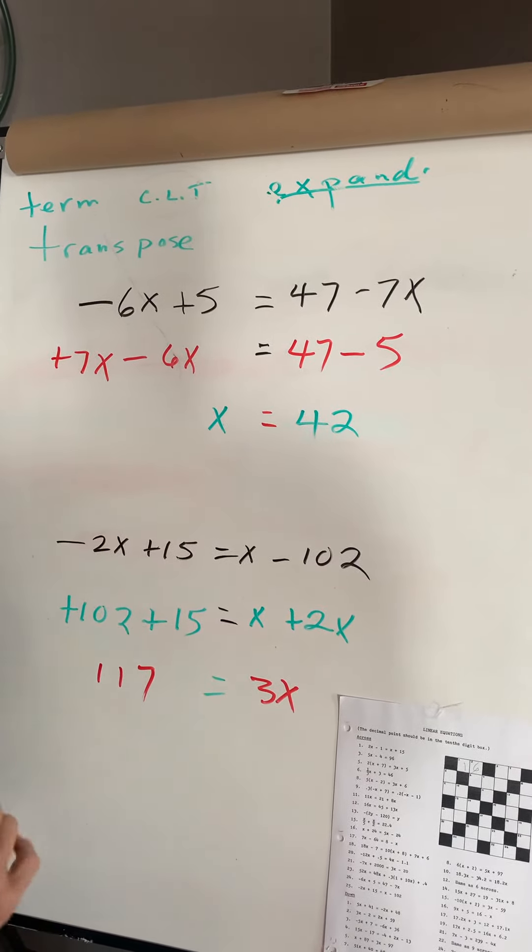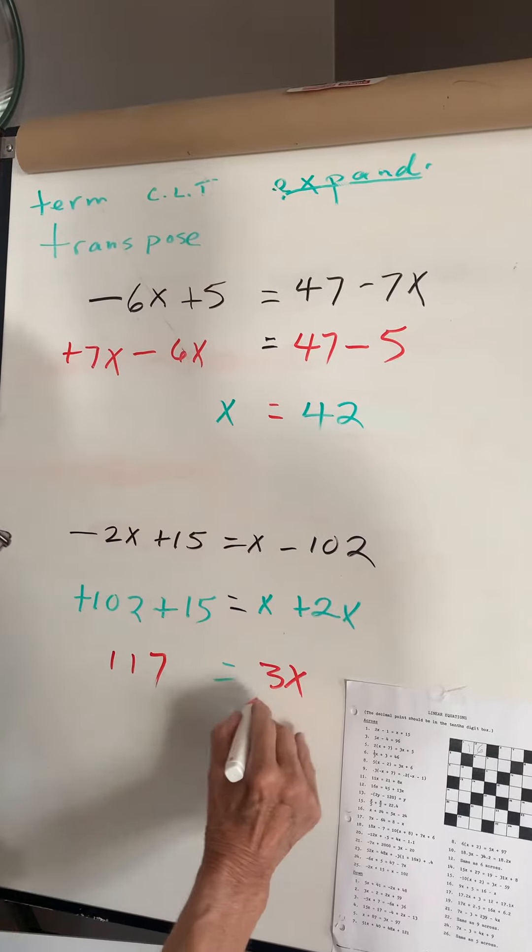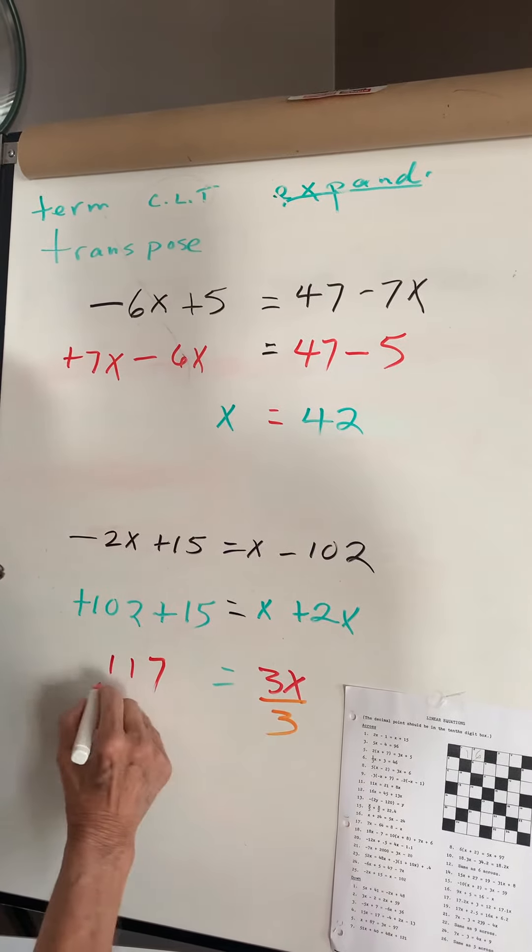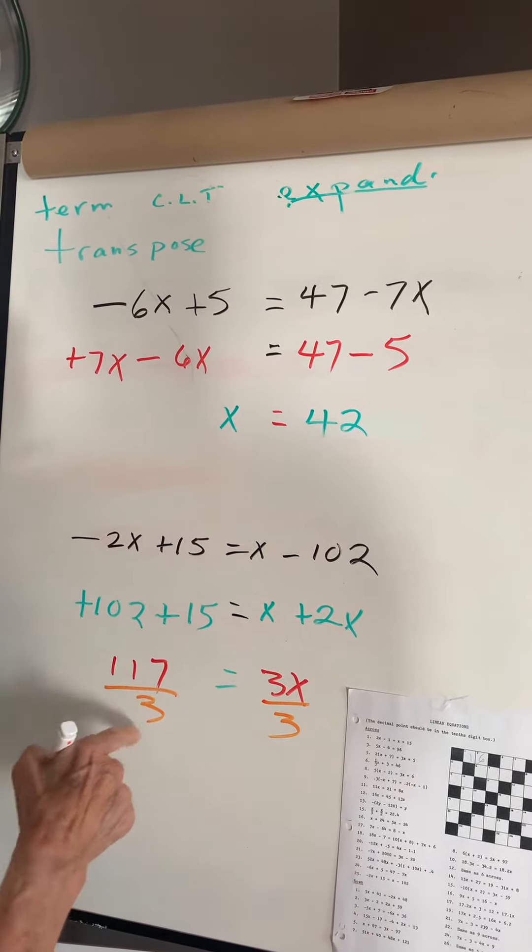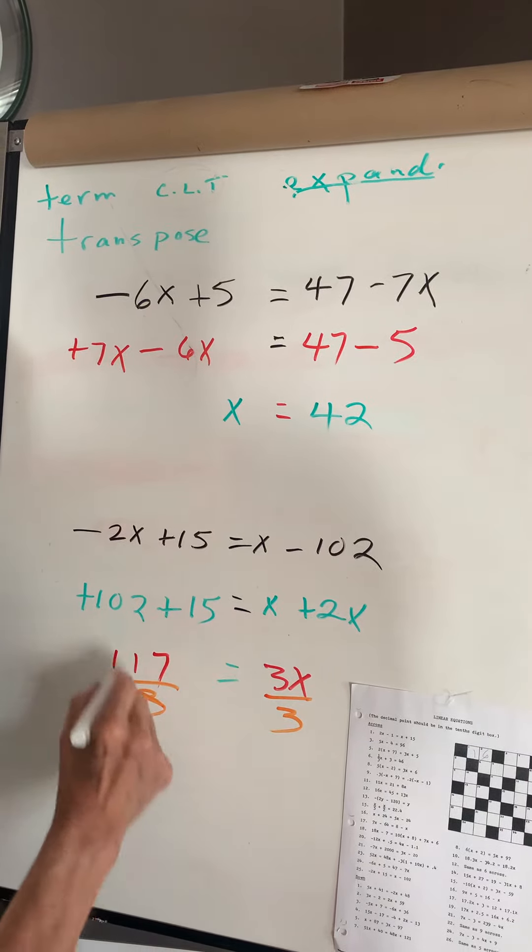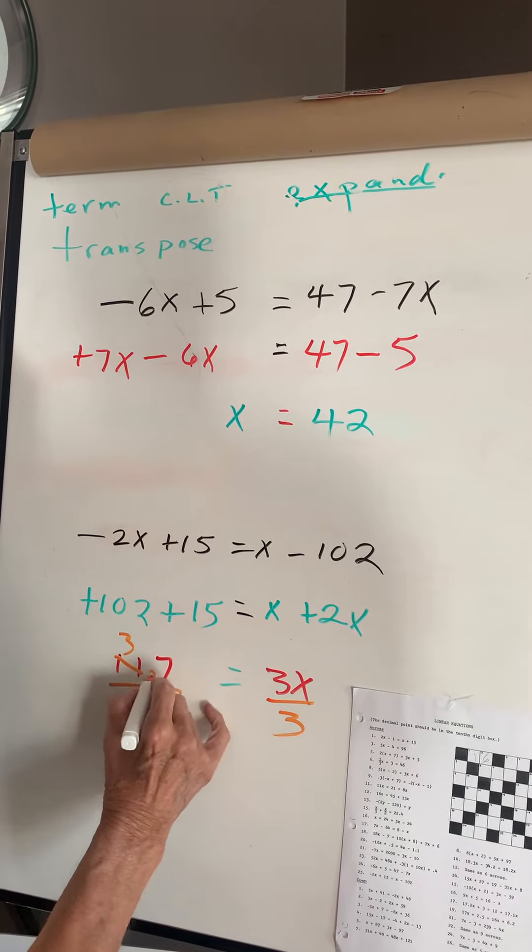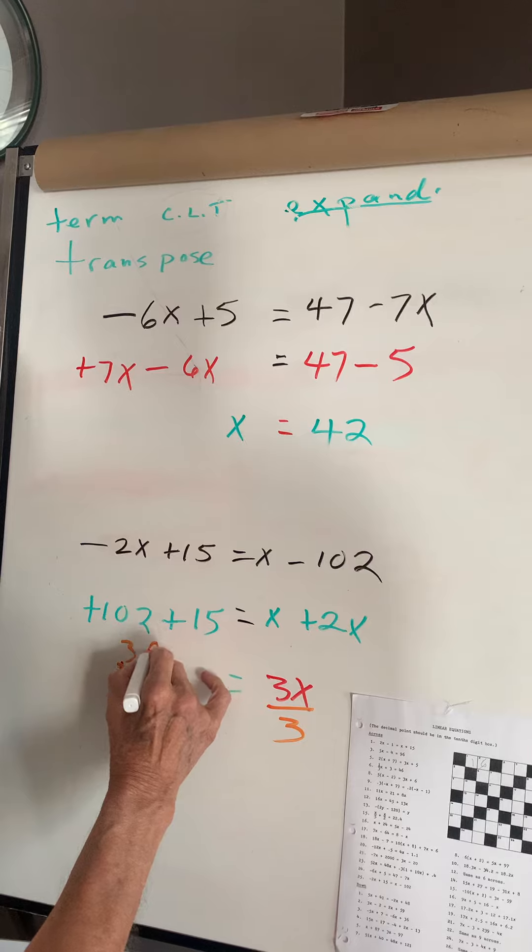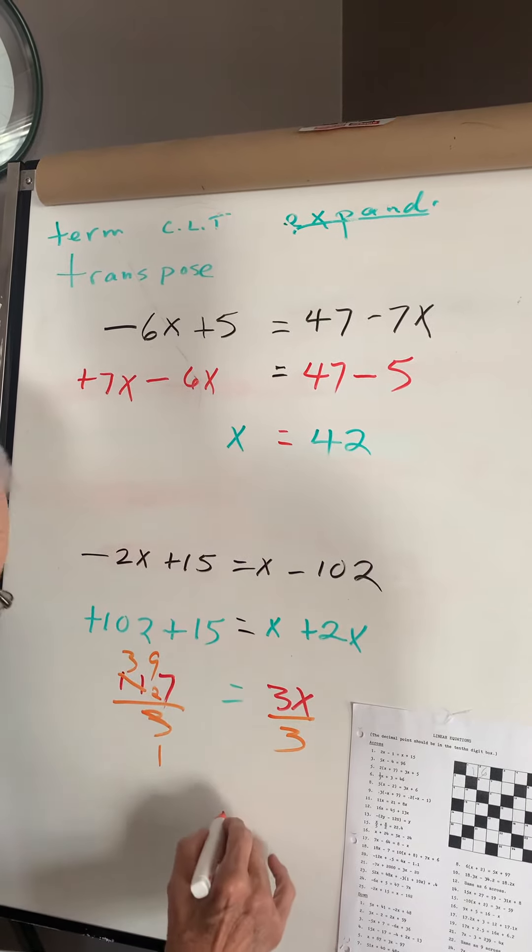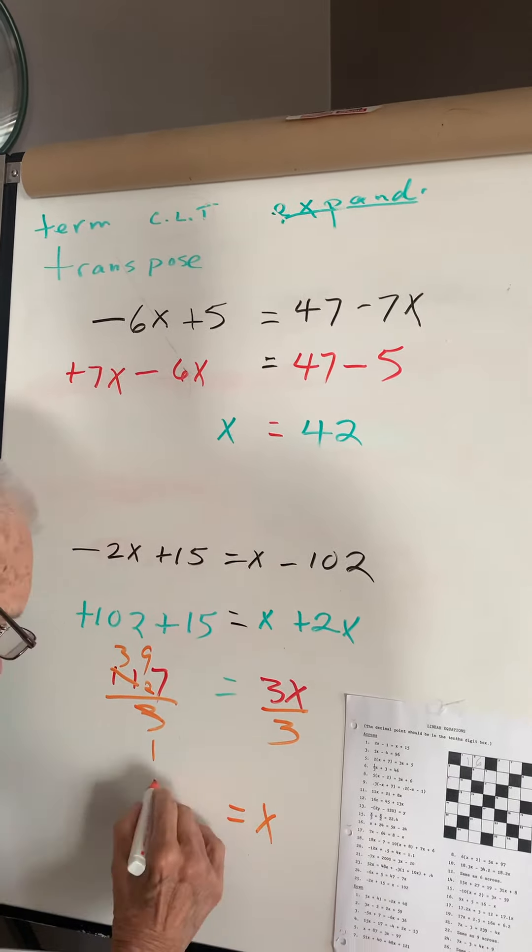Now I'm going to divide by 3. Divide by 3. 3 times 3 is 9. Carry 2. And 3 times 9 is 27. So, x will be 39.